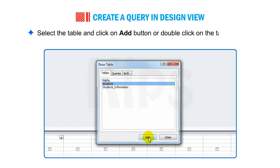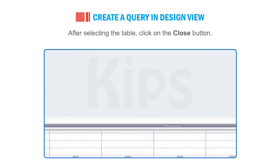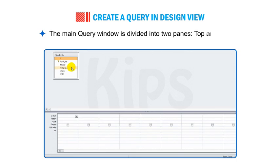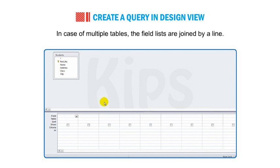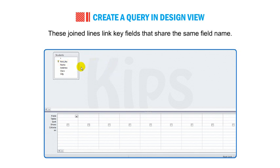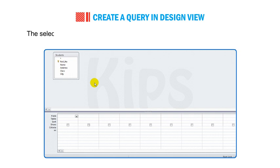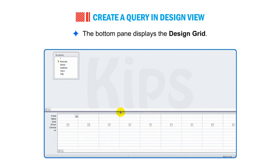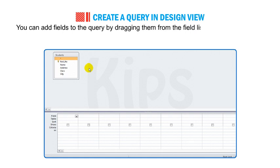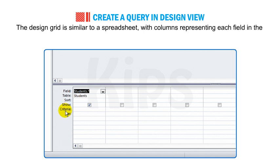Select the table and click the Add button or double-click on the table's name. Here we have selected the Students table. After selecting the table, click the Close button. The main query window is divided into two panes: top and bottom. The top pane is the object relationship pane that displays the tables selected for the query. In case of multiple tables, the field lists are joined by a line, linking key fields that share the same field name. The bottom pane displays the design grid. You can add fields to the query by dragging them from the field list to the design grid or by double-clicking on the field. The design grid is similar to a spreadsheet with columns representing each field in the query.